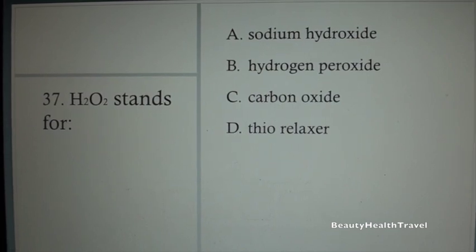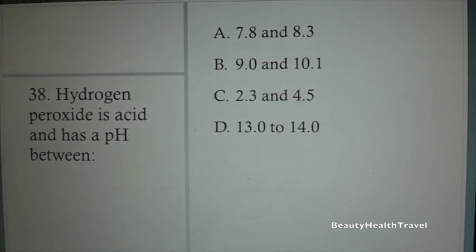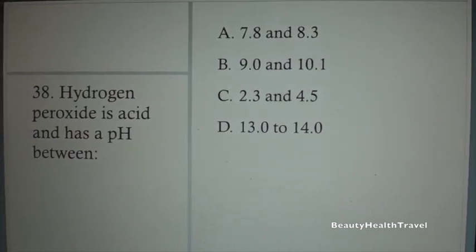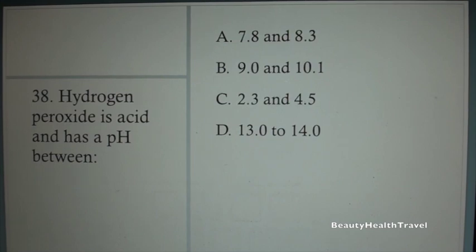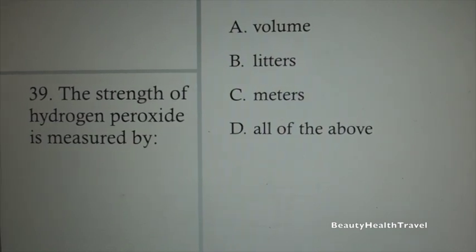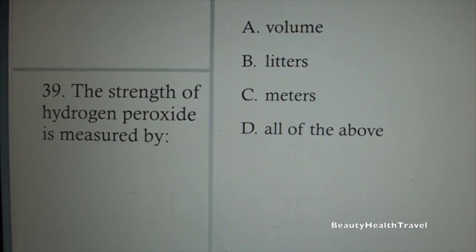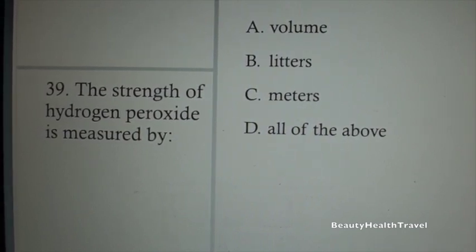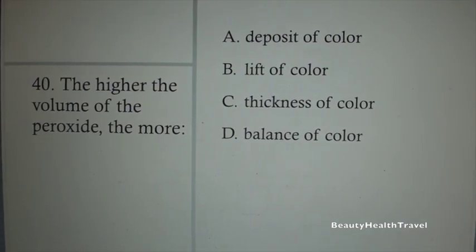Question 34: Which hair color category covers gray best? A. Temporary, B. Semi-permanent, C. Permanent, D. Demi-permanent. Question 35: Permanent hair color contains: A. Aniline derivative tint, B. Sodium hydroxide, C. Guanidine hydroxide, D. Diocreme. Question 36: What is called developer, oxidizing agent, or catalyst? A. Hydrogen peroxide, B. Cuticle remover, C. Thiogel, D. Sodium hydroxide.